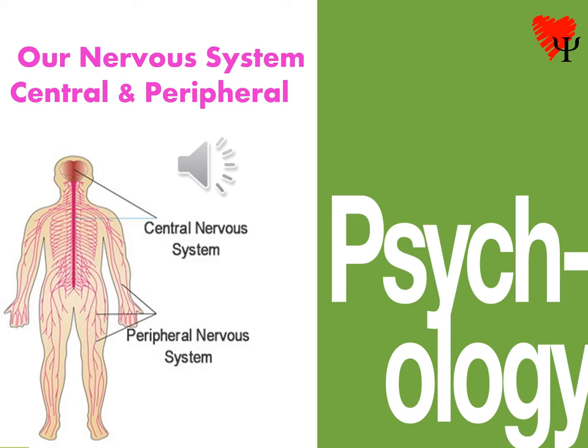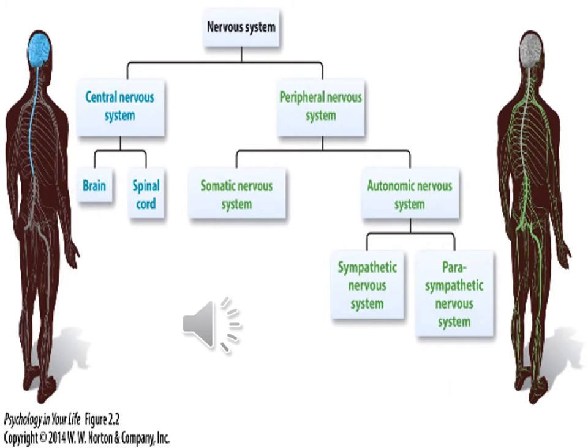Now let's consider the divisions of the nervous system: central and peripheral. The central nervous system, often abbreviated CNS, has two parts encased in bone — the brain and the spinal cord. The peripheral nervous system, like the word 'periphery' meaning outskirts, is outside of bone.